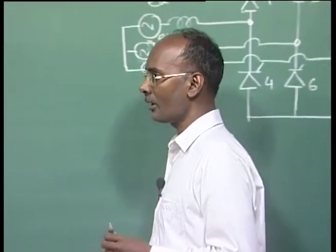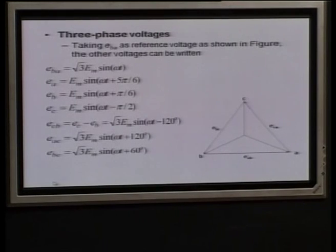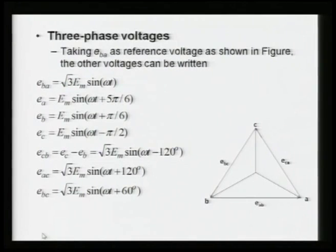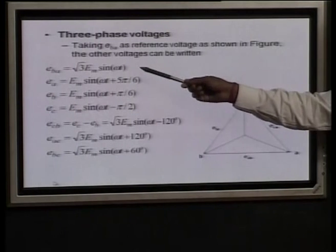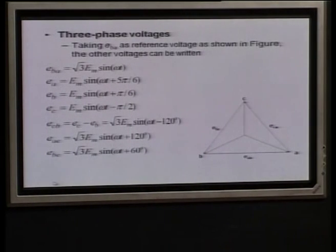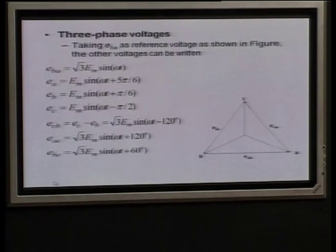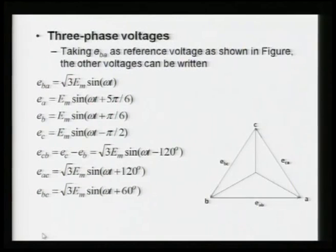We also discussed the three-phase voltages, and I took E_BA as a reference. The reason is that the commutation voltage for valve three will be E_BA. The phase voltages and line voltages are written here because they will be used when plotting valve voltages, output voltage, and calculating the average DC output voltage across the converter.